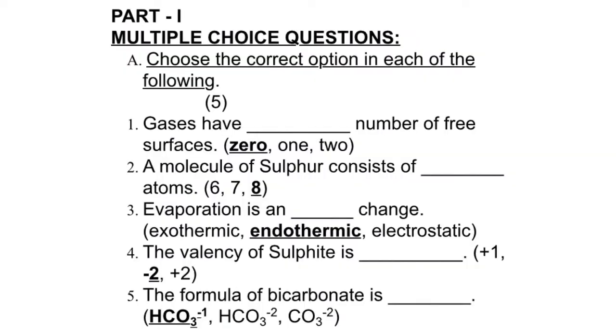Part 1 is multiple choice questions and A type is choose the correct option in each of the following. So we go to the first question: gases have dash number of free surfaces. We know that gases cannot be contained in open containers and that is why they have zero surface.